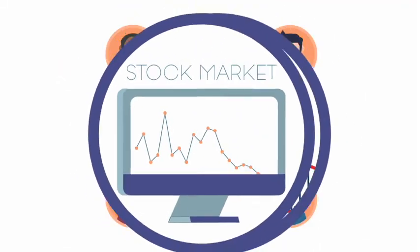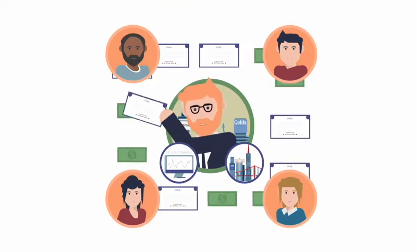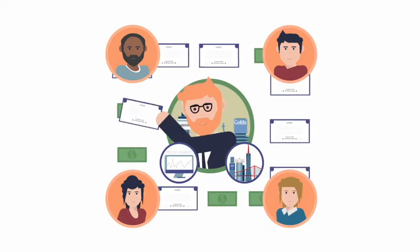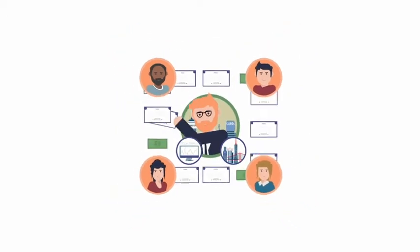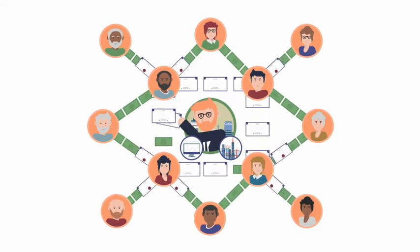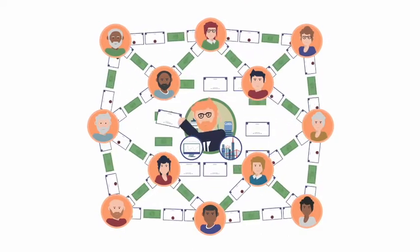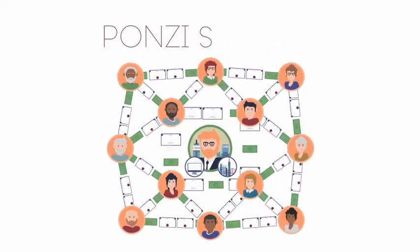In reality, the stock market is a massive system that shuffles money between investors. It is a system where current investors' profits are directly dependent on the inflow of money from new investors. And such a system is also known as a Ponzi scheme.